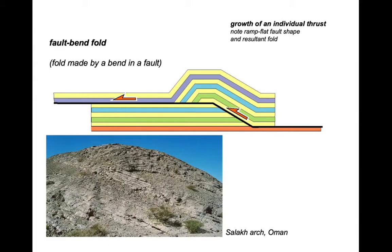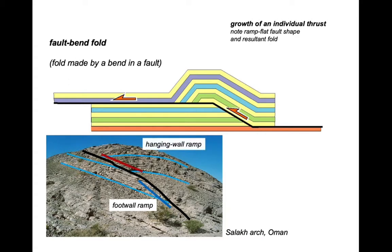And here's an example in nature from Oman. Let's add some graffiti. There goes the thrust climbing across the stratigraphy, and we've identified it from the terminations of bedding. There's the bedding, there's the termination in the foot wall — so that's the foot wall ramp — and there's the hanging wall ramp that once joined up with the foot wall. So those are the components of an individual thrust climbing up through the stratigraphy, creating a fault bend fold.